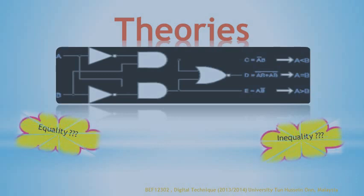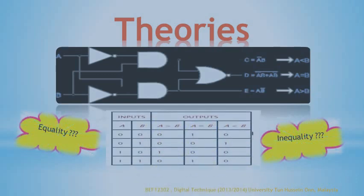Let us use this truth table to improve our understanding. The equality condition occurs when all pairs of corresponding digits of variable A and variable B are equal — in equality, the output will be high. The inequality condition is when variable A has a lesser input than B, and also when variable A has a higher input compared to variable B. In the inequality case, the output is high, meaning when the inputs are different, the outputs for C and E will give a high output.